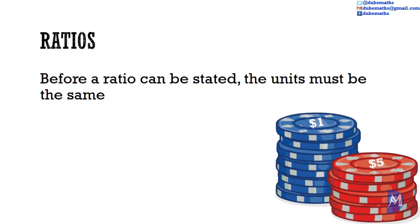Before a ratio can be stated, the units must be the same. Here each blue chip is worth $1 and each red chip is worth $5. Thus, with the blue chips I have $8 but with the red chips I have $25.